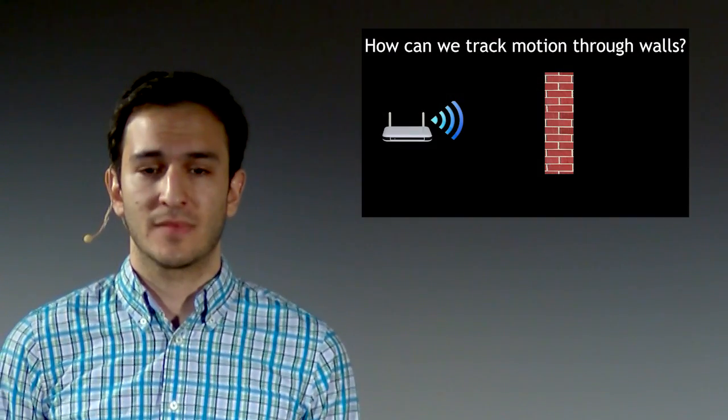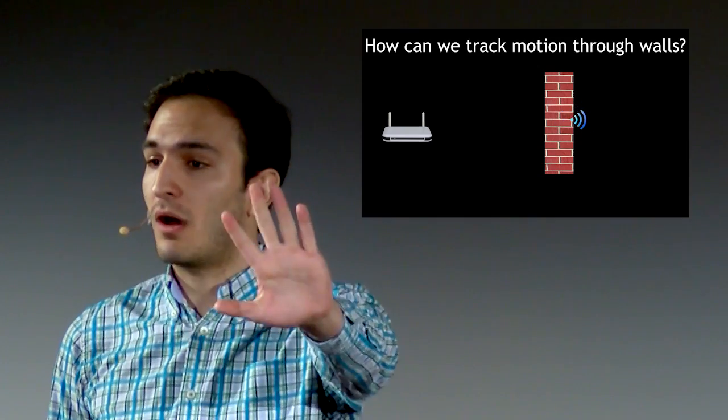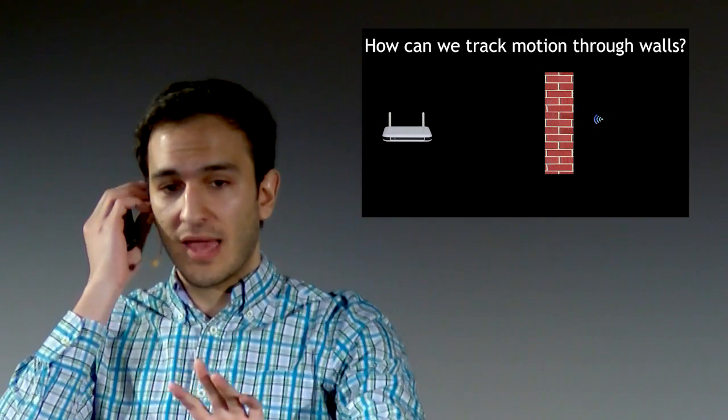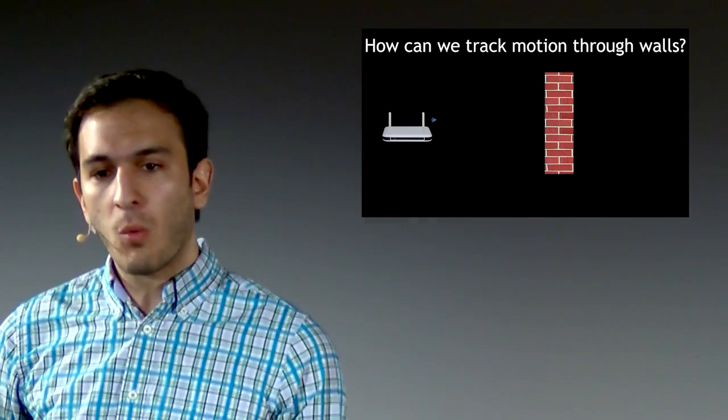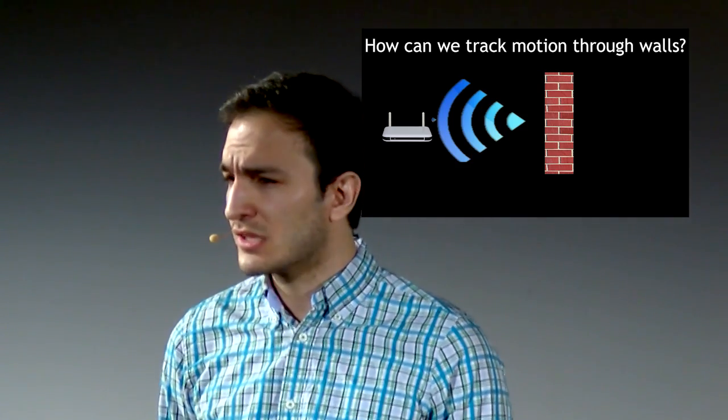So what is this very basic idea that allows us to achieve this? Well, when you have a wireless router and it transmits a signal, part of the signal will traverse the wall, reflect off the person's body on the other side of the wall, and then come back to us. And if you're wondering why Wi-Fi signals can traverse walls, just remember that you can receive Wi-Fi even from another room. So if you can somehow get this tiny signal after it traverses the wall forward and backward, then maybe we can start tracking the person on the other side of the wall. Of course, it's not that simple.